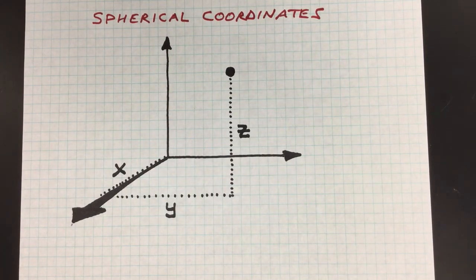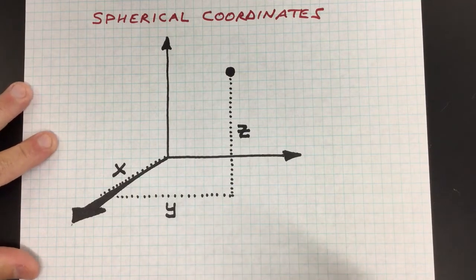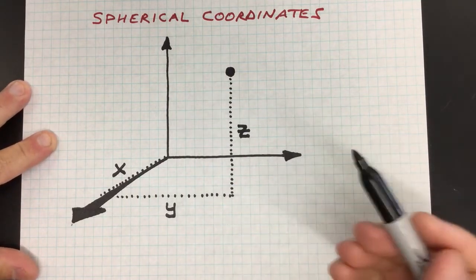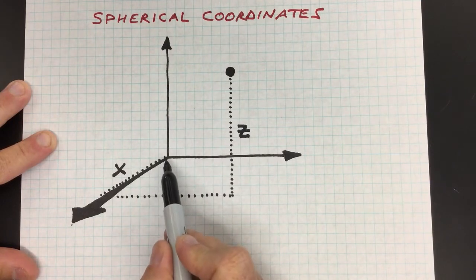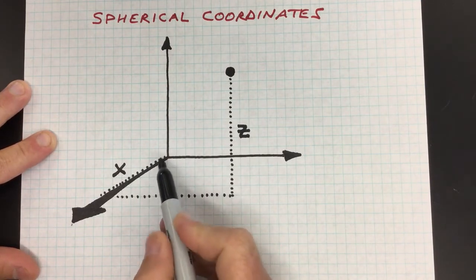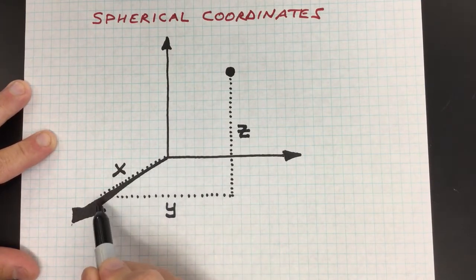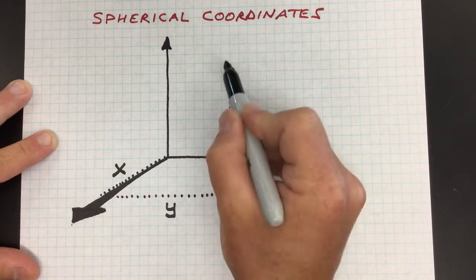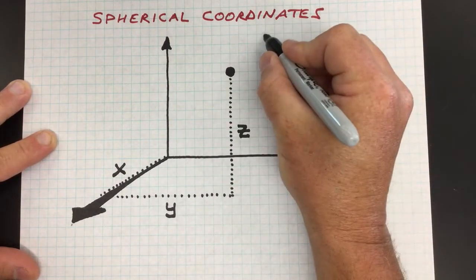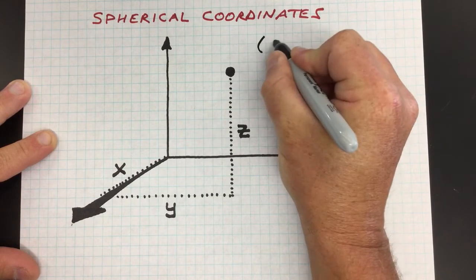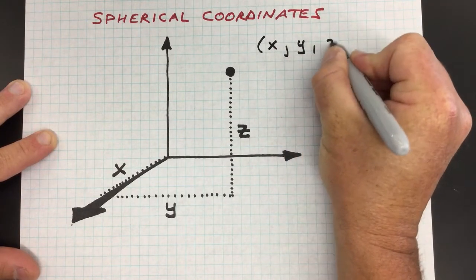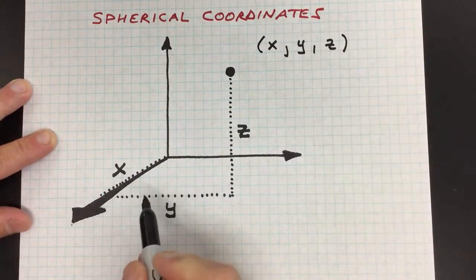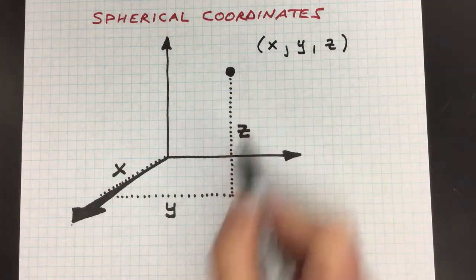We're going to learn about spherical coordinates. Starting with basic Cartesian or rectangular coordinates, one way to locate where a point is, is to have an origin in space and say how far out do you go, how far over do you go, and how far up do you go. The coordinates of that point are given as a triplet x, y, z — how far out, how far over, how far up.